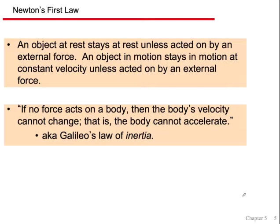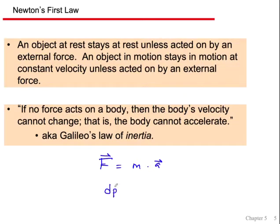Object at rest stays at rest. If no force is acting on a body, then an object's velocity cannot change. Newton didn't write it as F = ma, although that's simply the way we write it. Remember that mass is a scalar and force and acceleration are vectors, so the force and the acceleration are always pointing in the same direction. The way Newton actually wrote it was as a derivative — the derivative of momentum with respect to time gives us our force. You could rewrite this as mass times dv/dt, which is the acceleration, or mass times acceleration. Newton wrote it in terms of the change of momentum of an object.